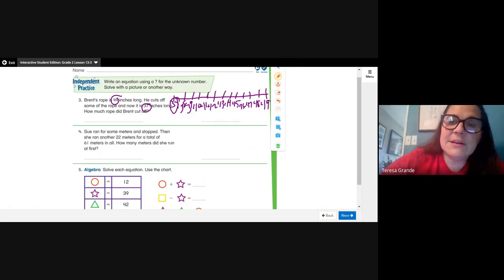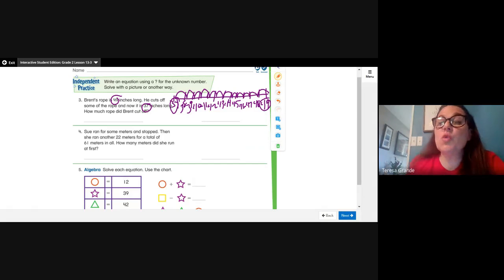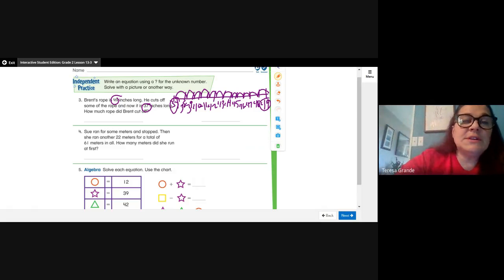So from 37 to 49, let's count: 1, 2, 3, 4, 5, 6, 7, 8, 9, 10, 11, 12. He cut off 12 inches of rope. In order to do this, we need to do 49 minus what equals 37. We know that the answer is, what boys and girls? 12 - 12 inches.